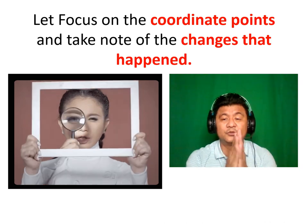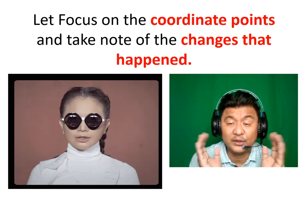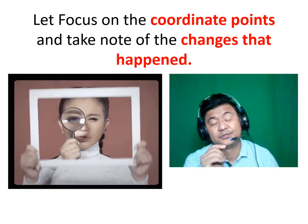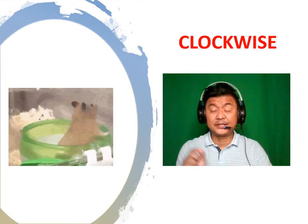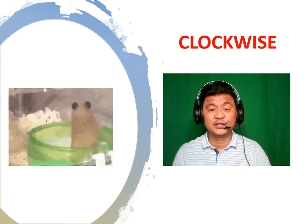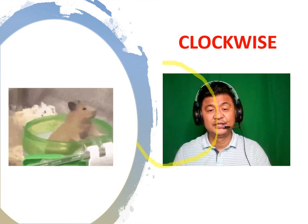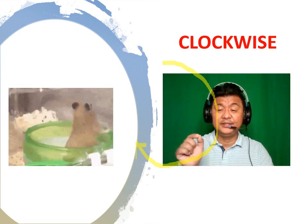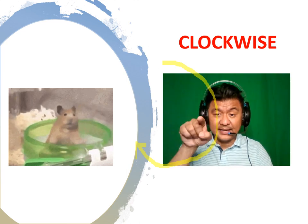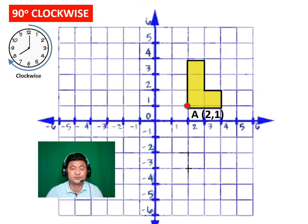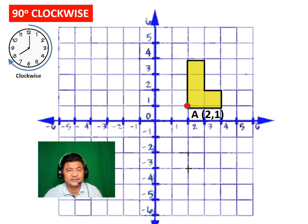Next, we will now focus on the coordinate points — what happens to the pre-image of X and Y. We will study the 90, 180, and 270 degrees at an axis at (0, 0). Clockwise movement — we will start with 90-degree clockwise.